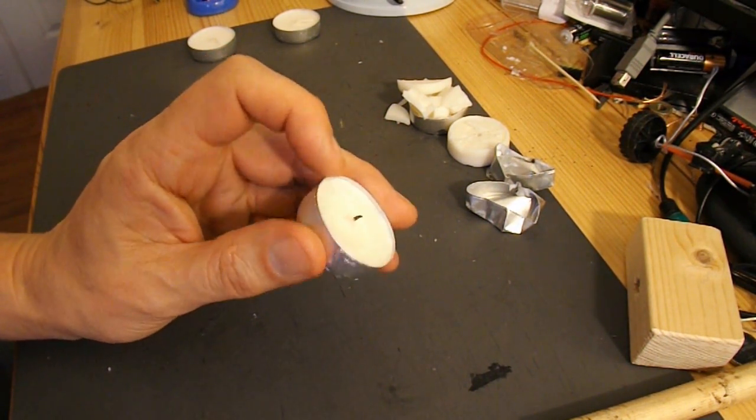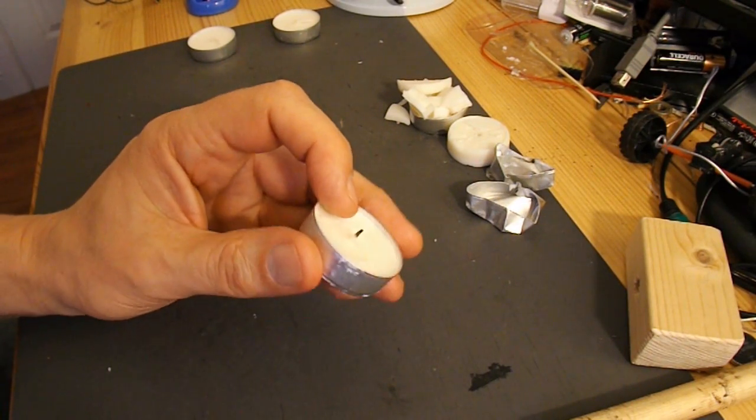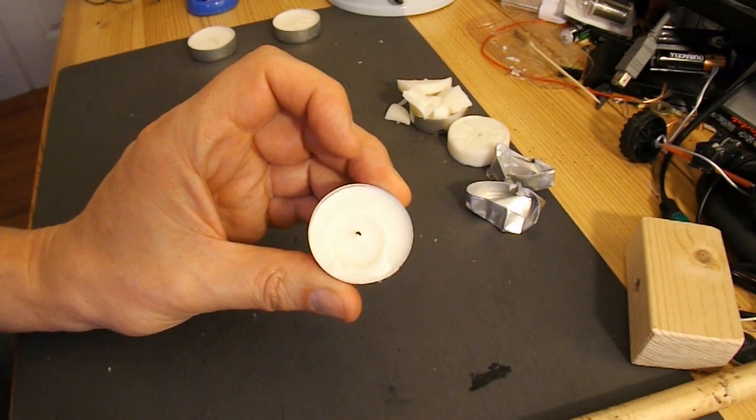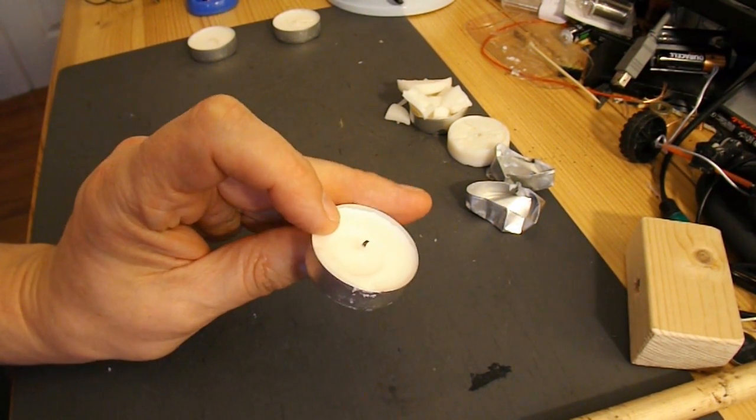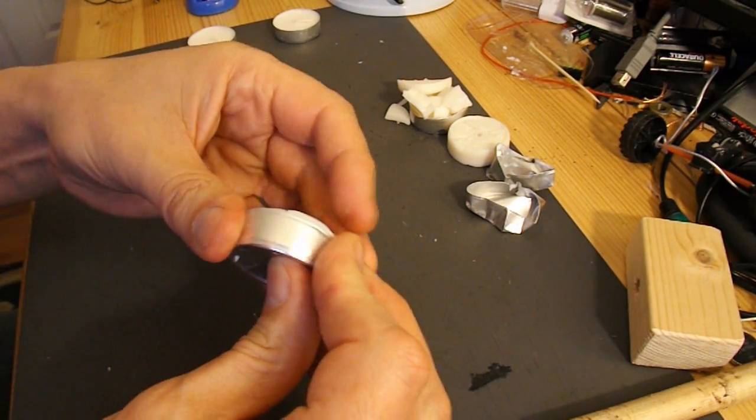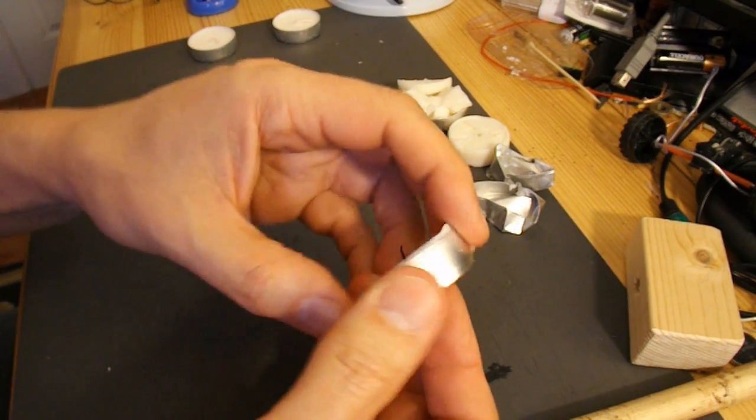This is a tea light that I've been using. That's why the wick is already black. But it's not giving enough power or heat to drive my pop-pop boat.